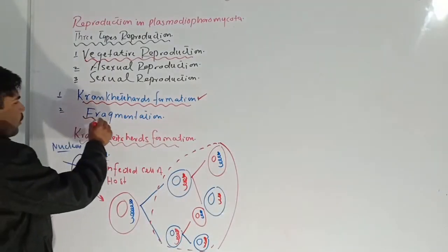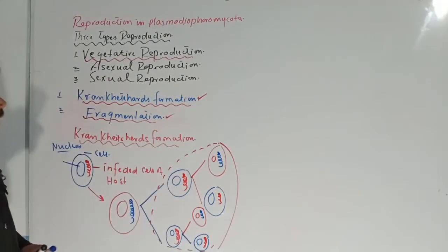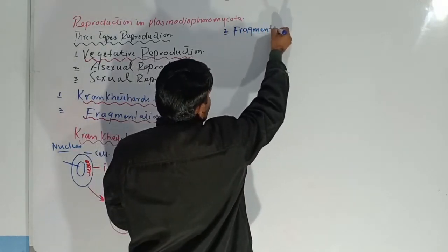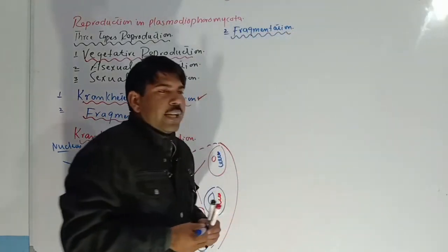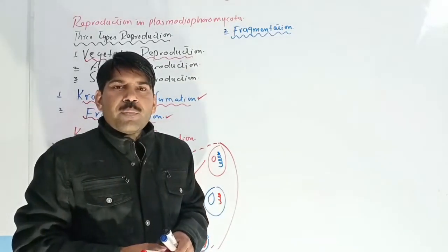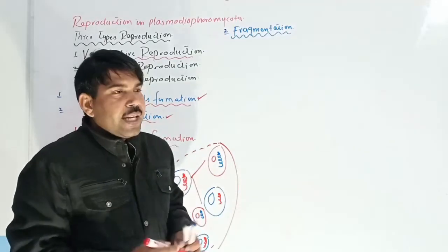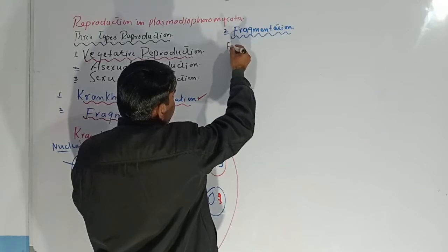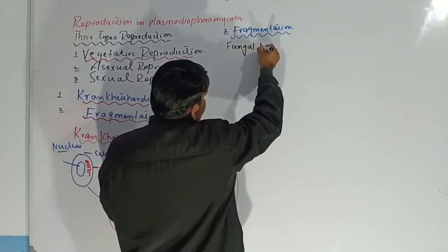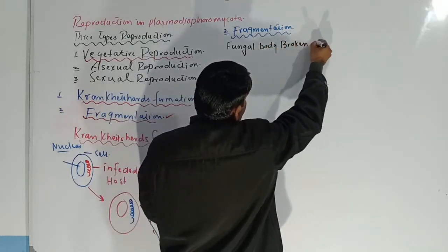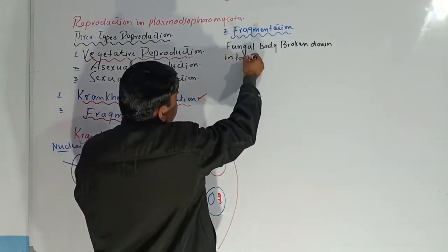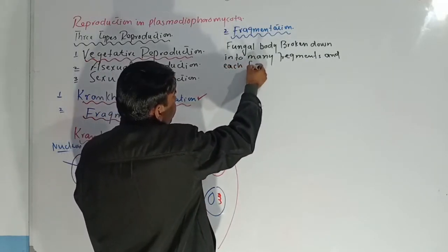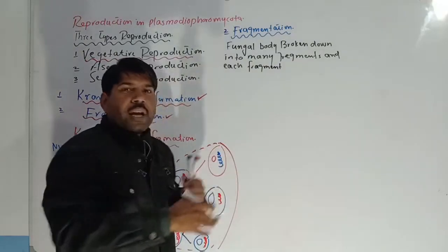The second method of vegetative reproduction is fragmentation. Fragmentation is a very common process. In this process, a fungal body is divided or broken down into many pieces or fragments, and each fragment produces a new fungal body.